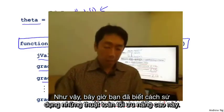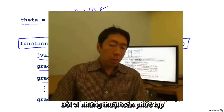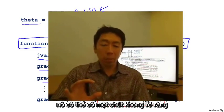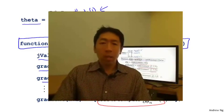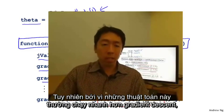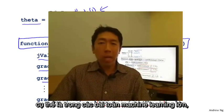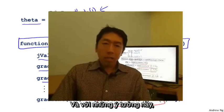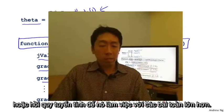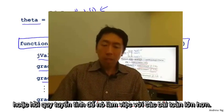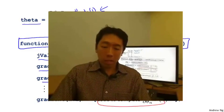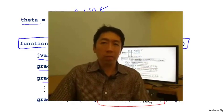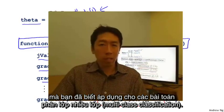Now you know how to use these advanced optimization algorithms. Because you're using a sophisticated optimization library, it makes the code just a little bit more opaque and maybe a little bit harder to debug. But because these algorithms often run much faster than gradient descent, whenever I have a large machine learning problem, I will use these algorithms instead of gradient descent. With these ideas, hopefully you'll be able to get logistic regression and also linear regression to work on much larger problems. That's it for advanced optimization concepts. In the next and final video on logistic regression, I want to tell you how to take the logistic regression algorithm and make it work on multi-class classification problems.